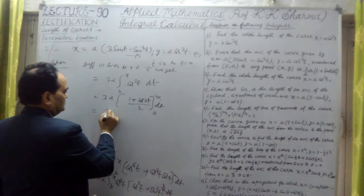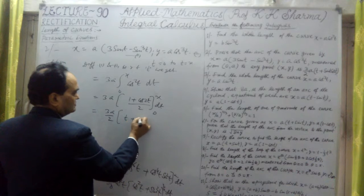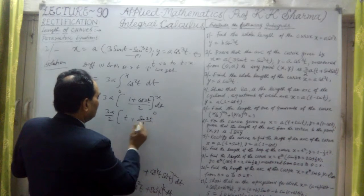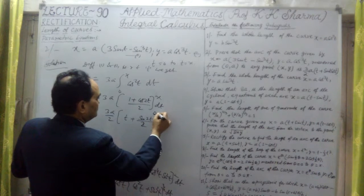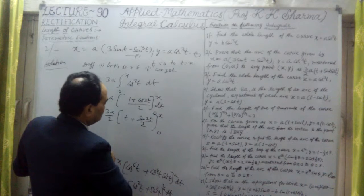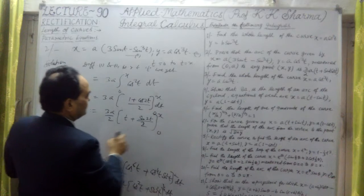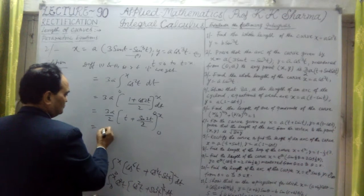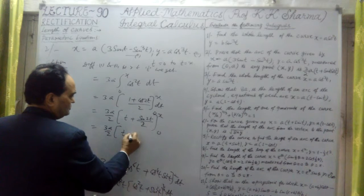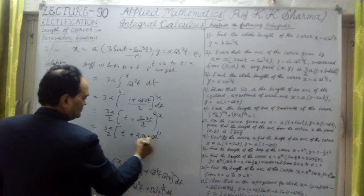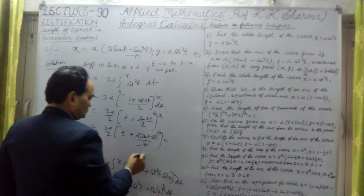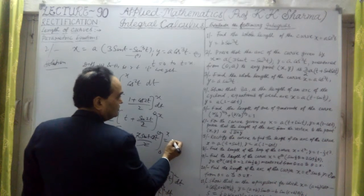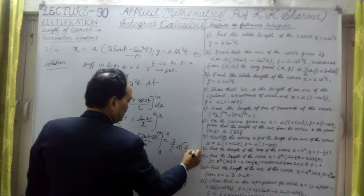Now this is 3a/2. Integration is t plus sin 2t upon 2, limit 0 to x. If it is 0 to pi/2, it is 0 in both cases. So it will be okay. But this is sin 2t = 2 sin t cos t. Now 0 to x — if I put only x, the value is there, not at 0. At 0 it is both 0. This is 3a/2. Now it is t plus 2 sin t cos t upon 2, and the 2 cancels out.